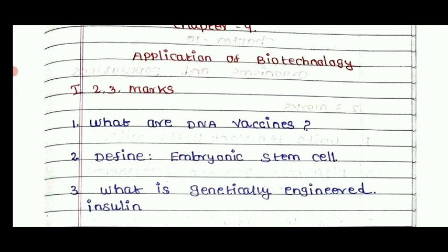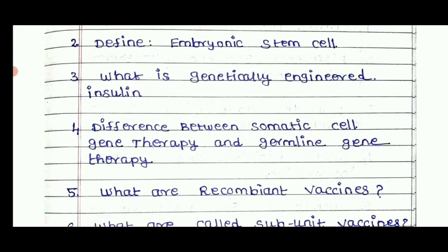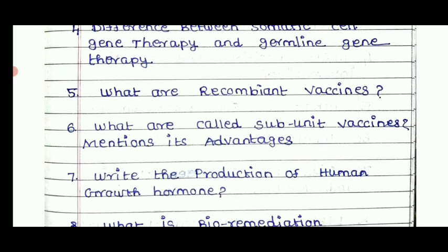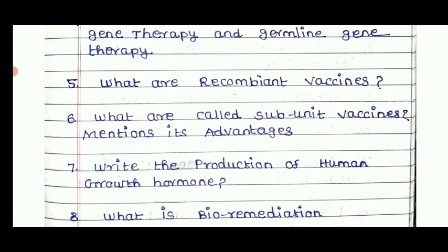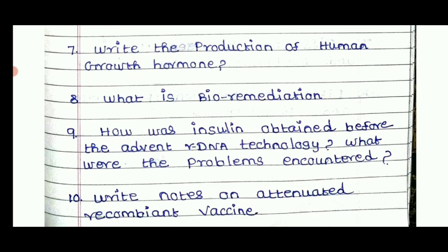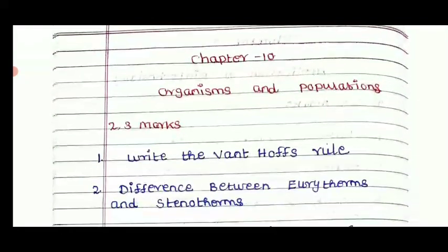For Chapter 9, Biotechnology, important questions include: what are recombinant vaccines; define embryonic stem cells; what is genetically engineered insulin; difference between somatic cell gene therapy and germinal gene therapy; what are subunit vaccines and mention their advantages; write the production process of human growth hormone; what is bioremediation; how was insulin produced before recombinant DNA technology; and write notes on recombinant vaccines.